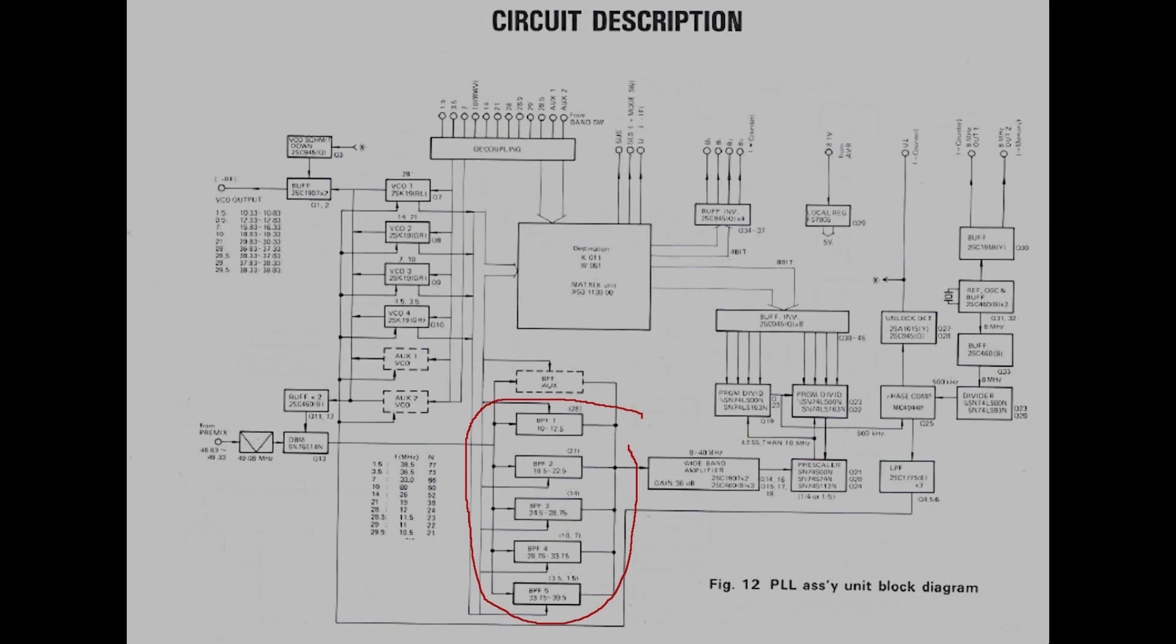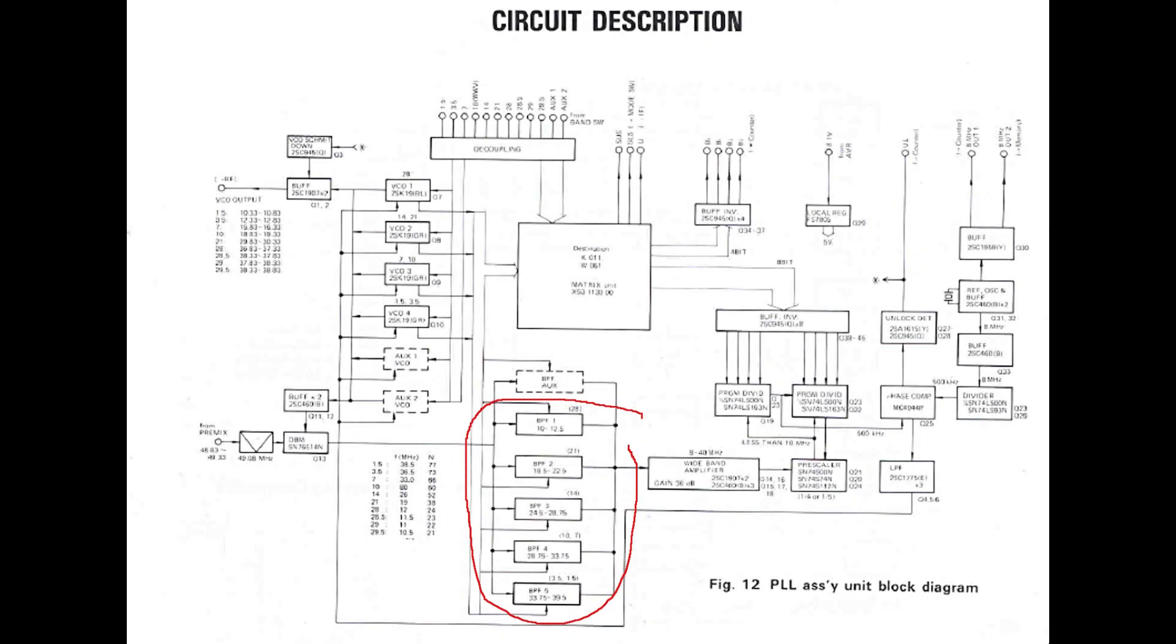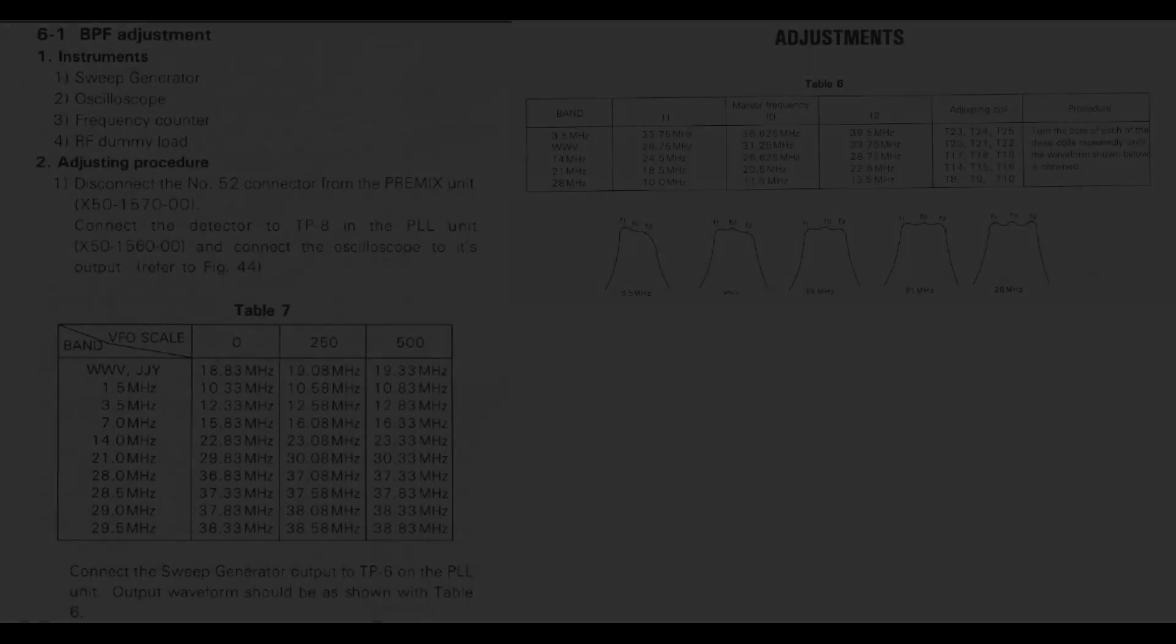Since now both the VCO circuits and the programmable dividers are working correctly, the only remaining issue on the PLL circuit should only be in the bandpass filters. So I decided to try the alignment procedures for them.